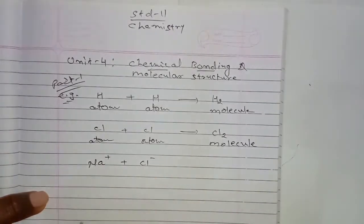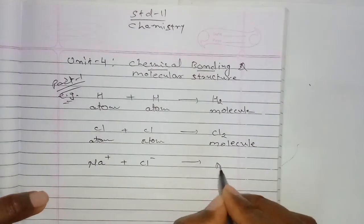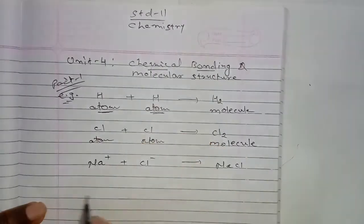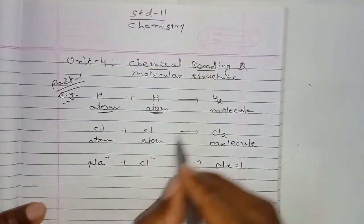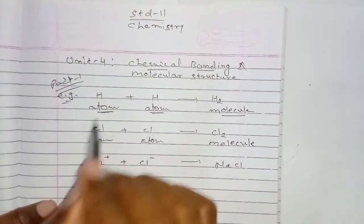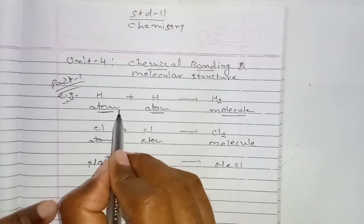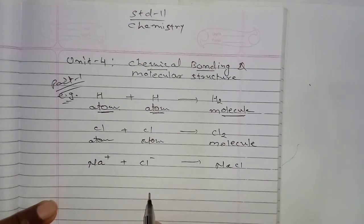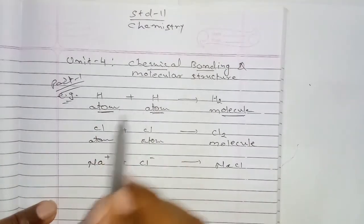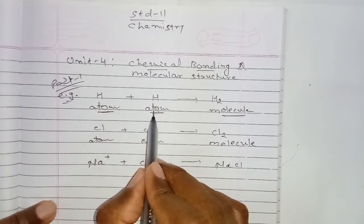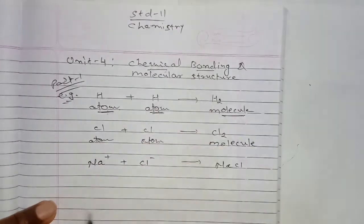A sodium ion combined with chloride forms sodium chloride. The main question is how atoms are combined to form a molecule, and what holds the atoms together. The strong force of attraction which holds the atoms together is called chemical bonding.